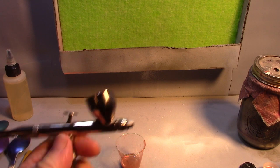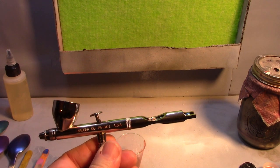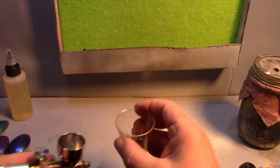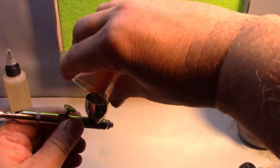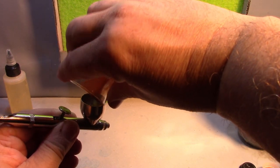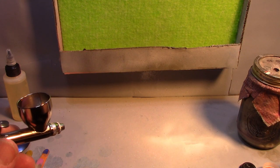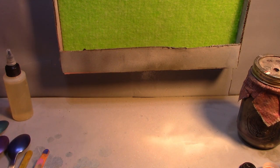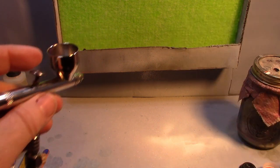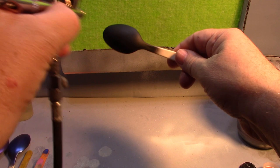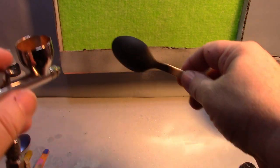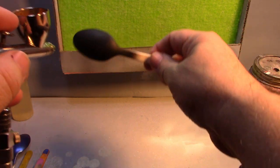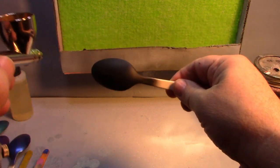I'm spraying at 15 pounds, but I'm using my Badger Patriot, which has a 0.5 needle. It didn't work great through my little needle, which is a 0.3. I don't know for sure if it's the needle size, or just my Neo doesn't like it. All right, so I'm going to put a real light coat on.